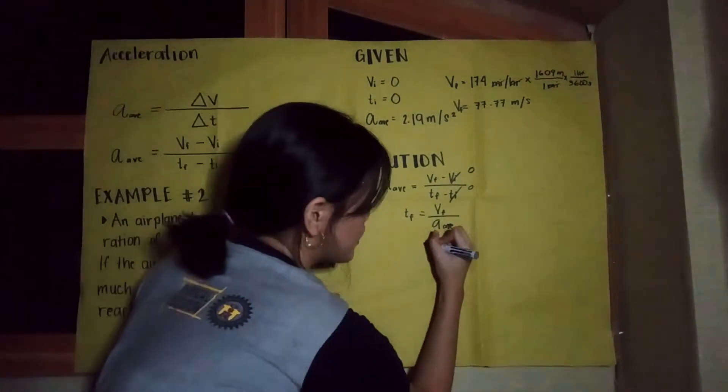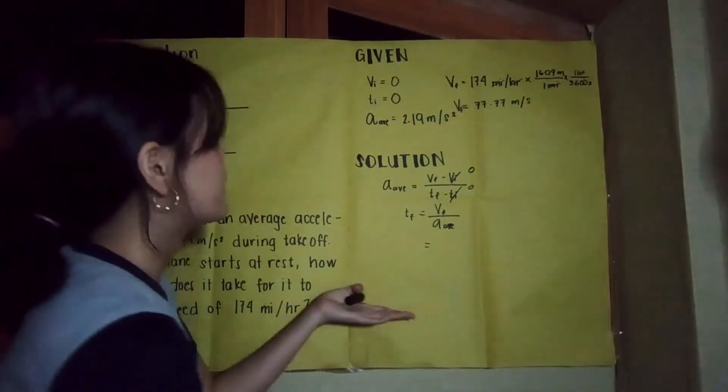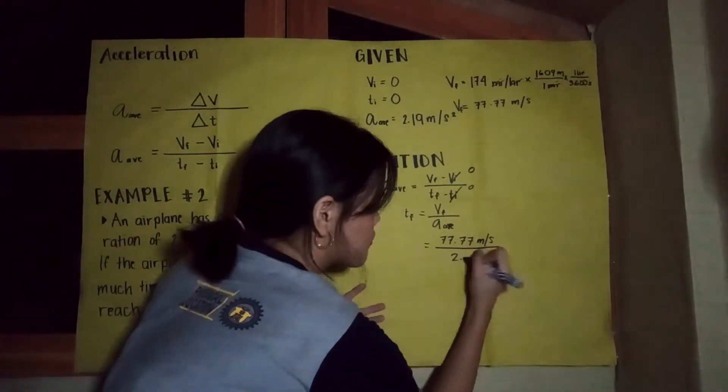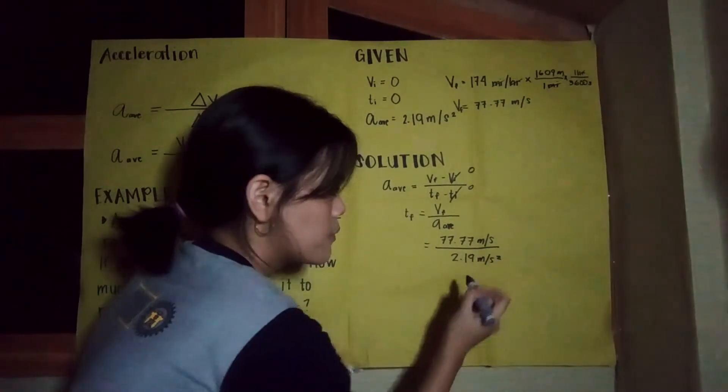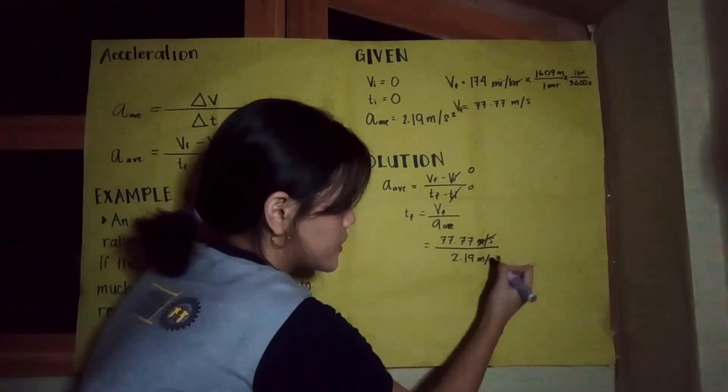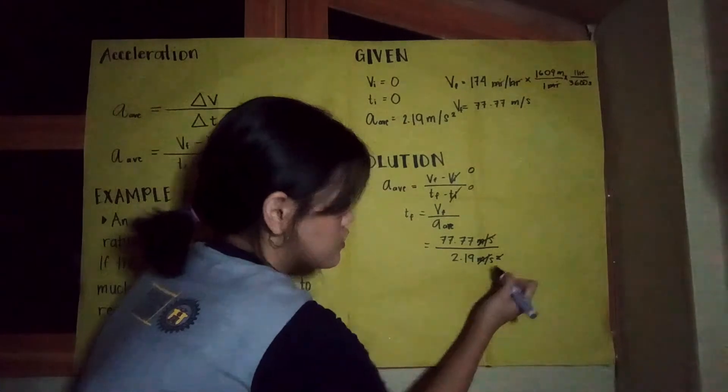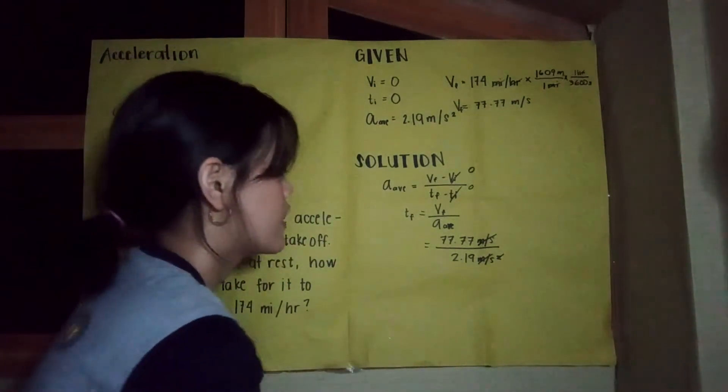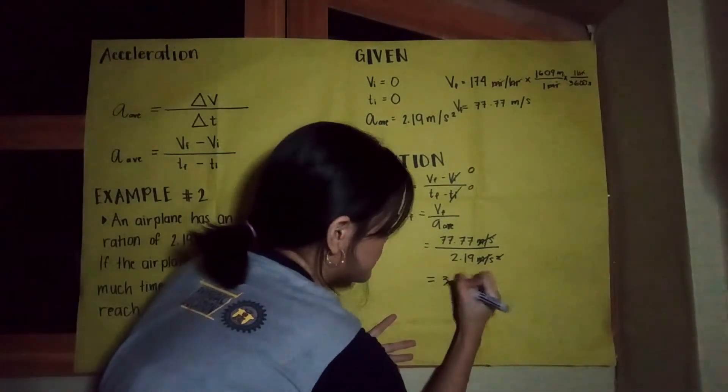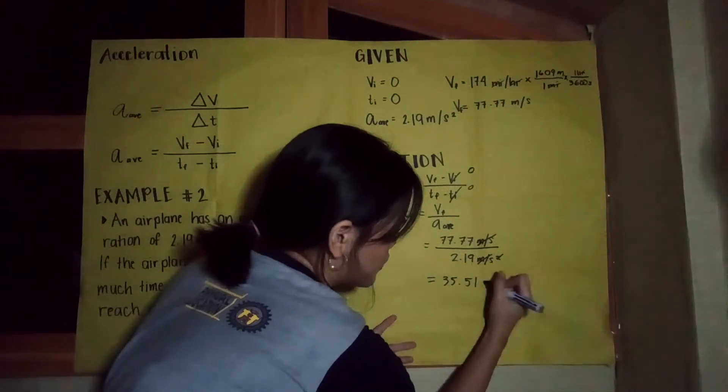And then we are just going to substitute the values. These units will be canceled, so we'll have seconds remaining. And what we're going to get is 35.51 seconds.